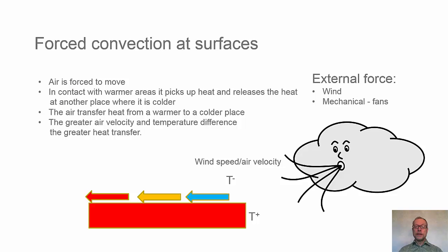We also have forced convection at surfaces, and in this case, air is forced by wind or mechanical devices. So when the air comes, the blue cold air comes in contact with the surface, it will once again pick up heat, will be warmer, and finally eventually receive the same temperature as the surface. This will represent a heat transfer from the surfaces to the air volume. And the greater air velocity and temperature difference, the greater heat transfer we will have.